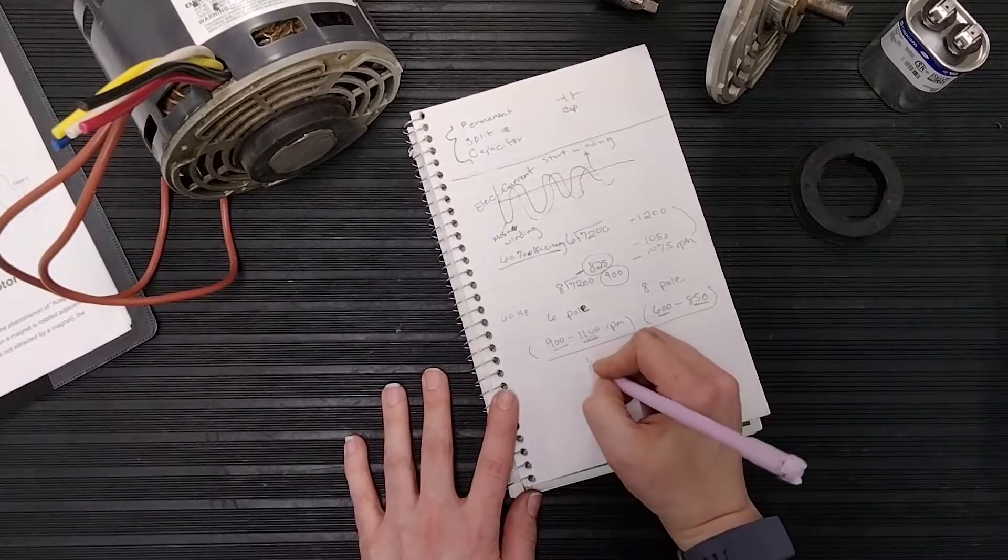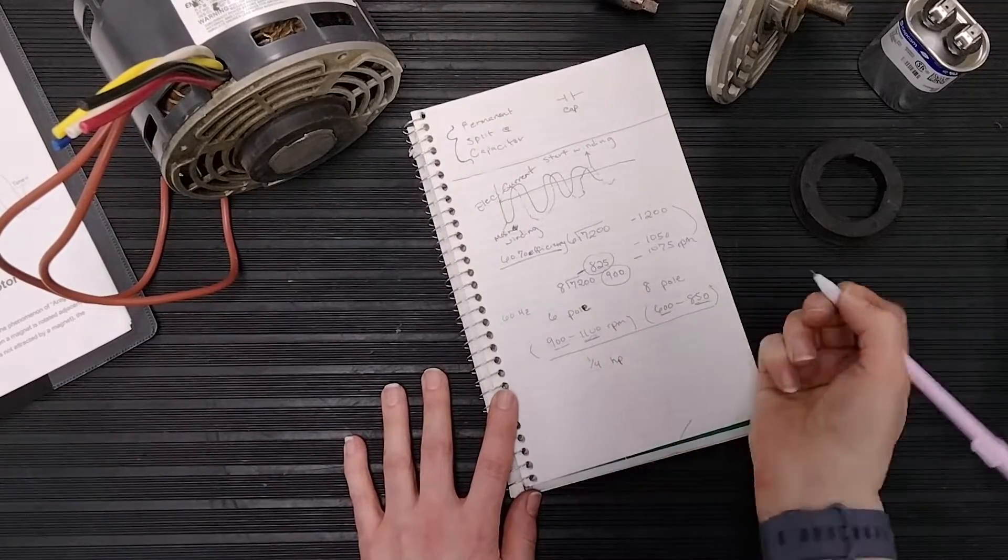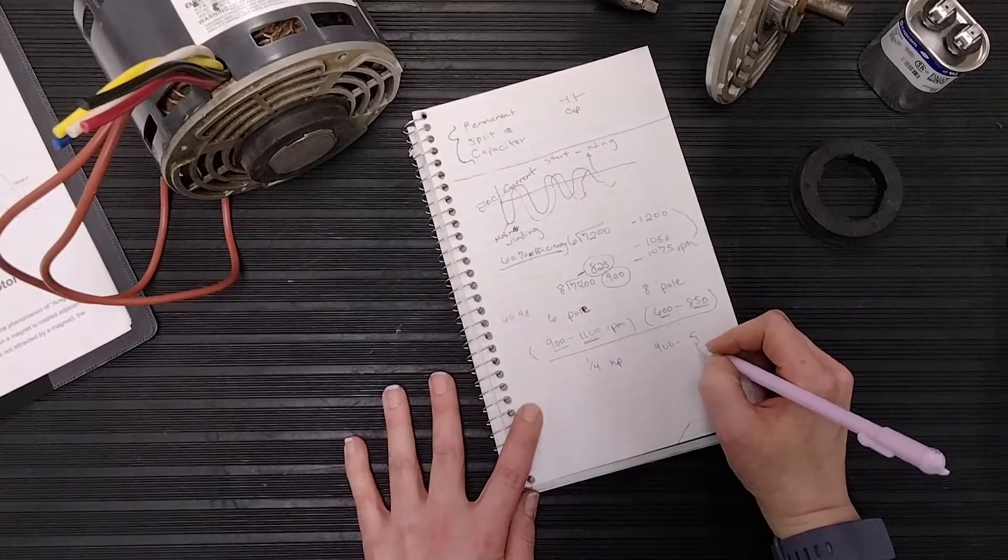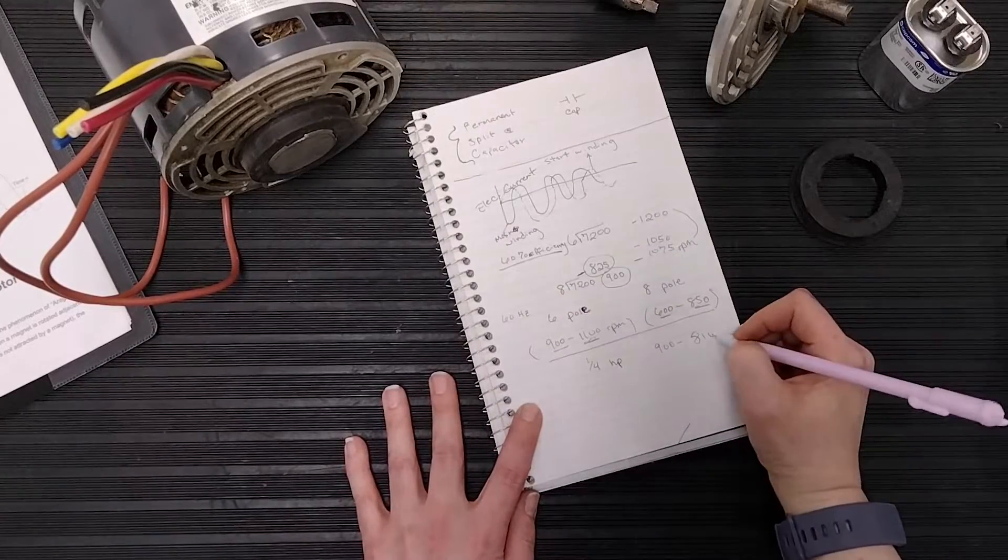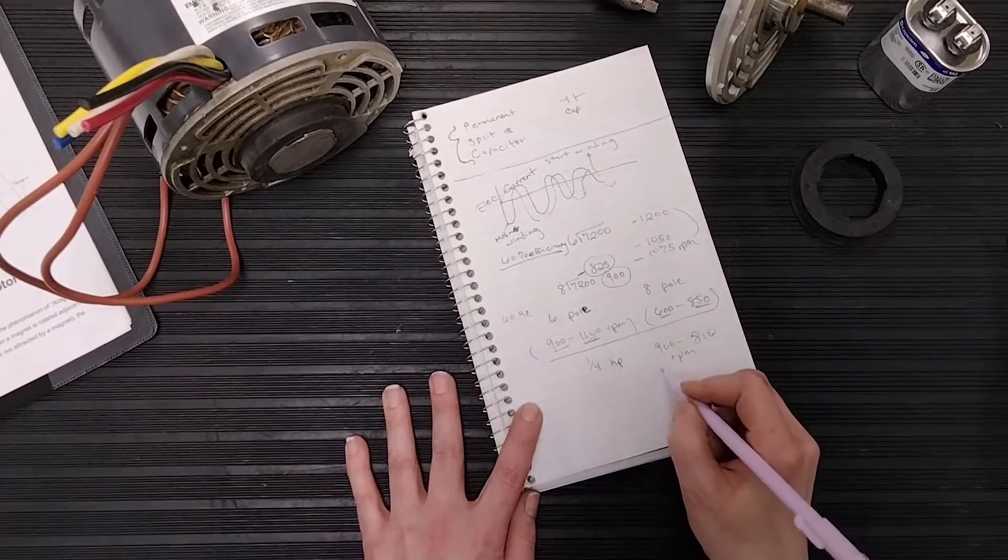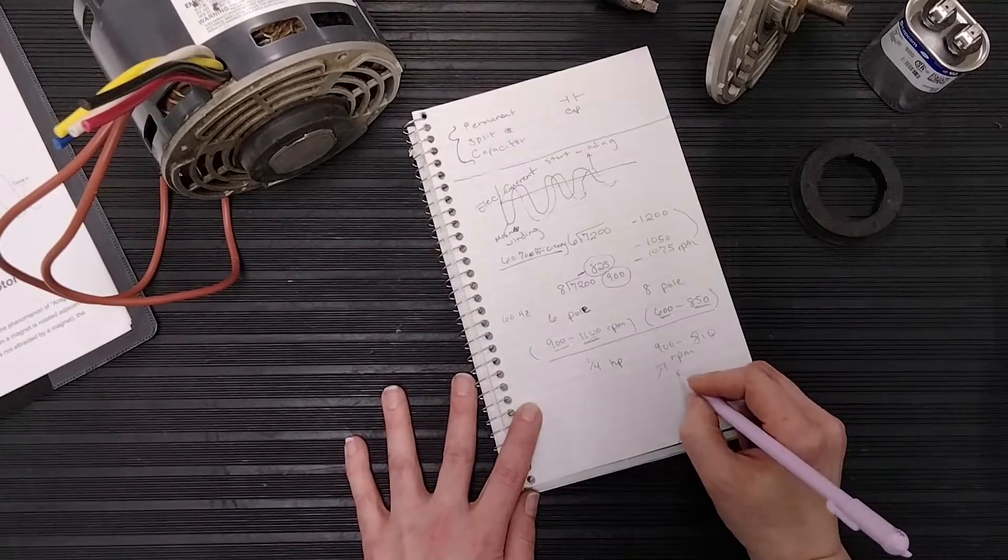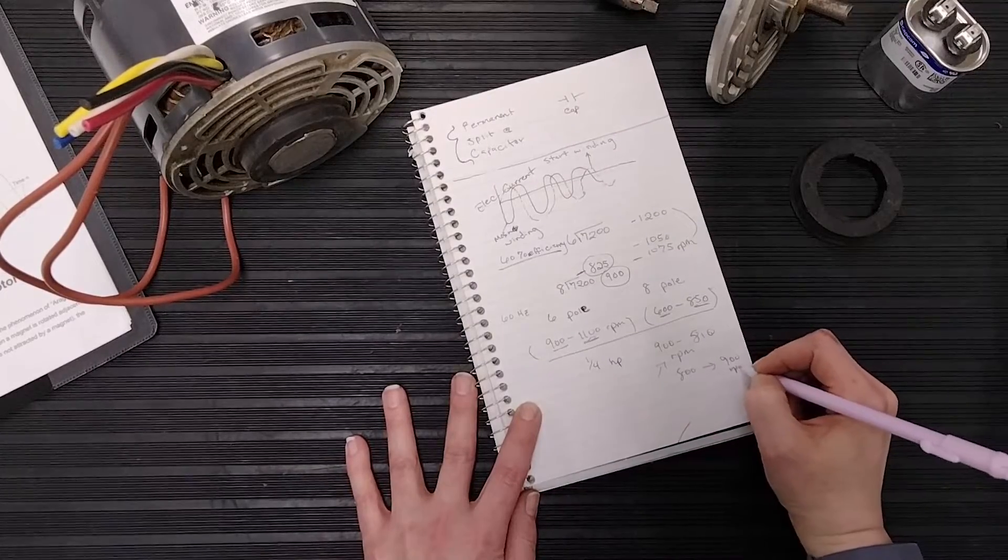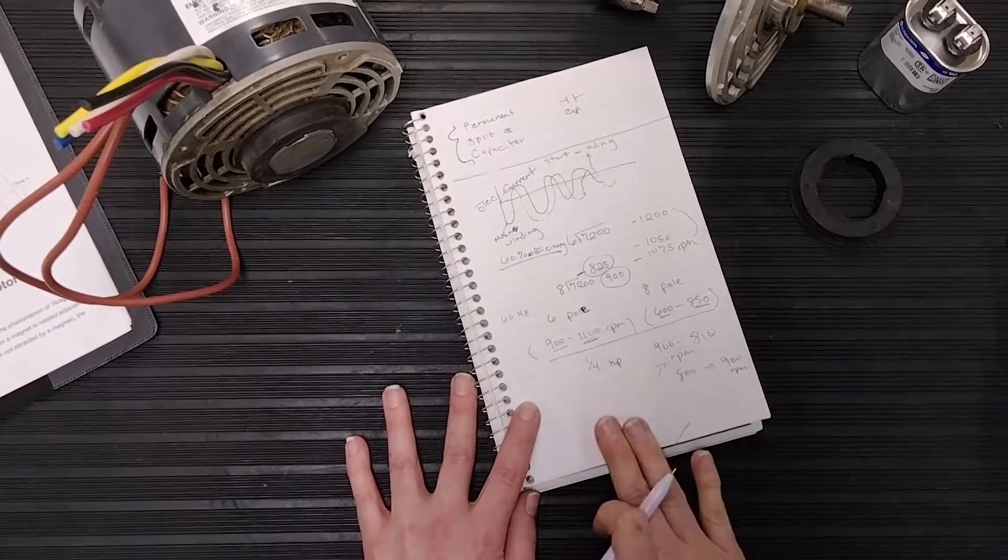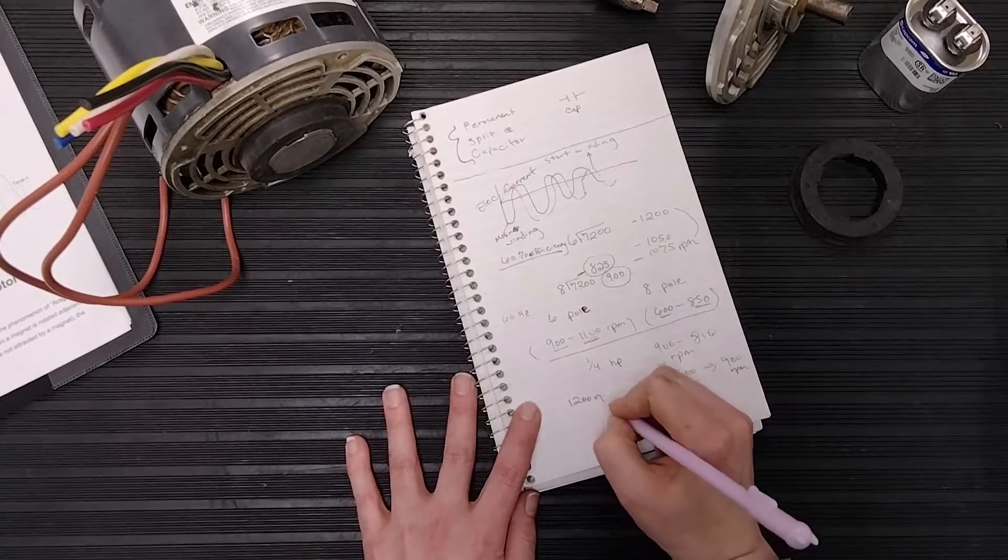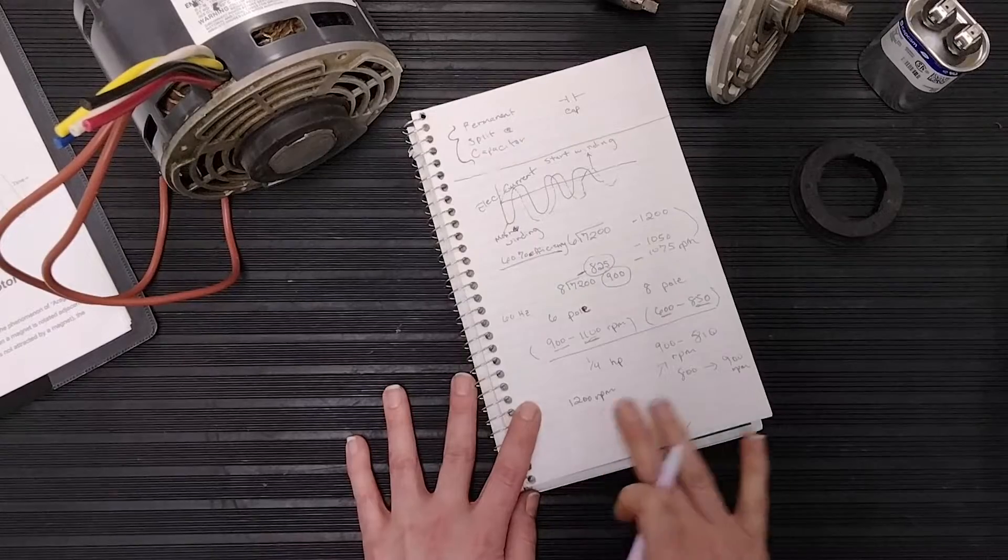Make sure that the specs line up. If yours is a quarter horsepower, somewhere between 900 to, I've seen even some motors that say 810 RPM, replace it with something that's going to be somewhere between 800 to 900 RPM. Same goes for those 1200 RPM motors.